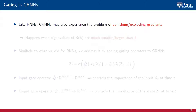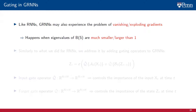Similarly to RNNs, GRNNs can also experience the issue of vanishing and exploding gradients when encoding long-term dependencies of graph processes. In long-term dependencies, gradients vanish when the eigenvalues of B(s), the state-to-state graph filter, are much smaller than 1, which makes the weights B(s) exponentially smaller. They explode when the eigenvalues of B(s) are much larger than 1, making the weights B(s) exponentially larger.